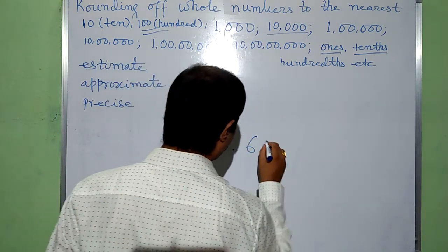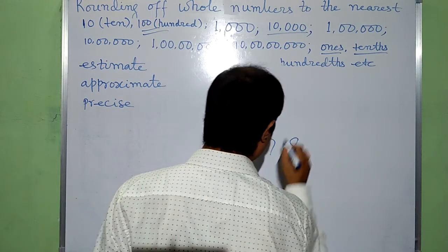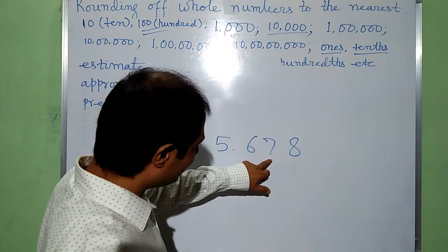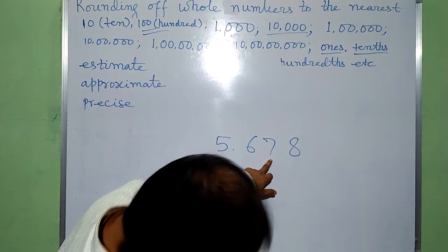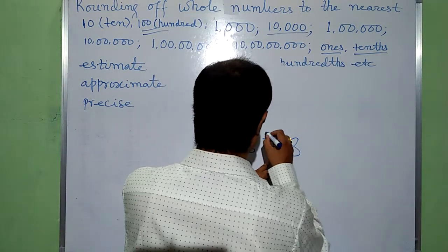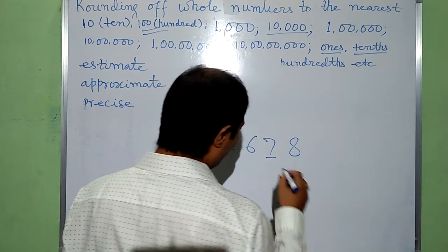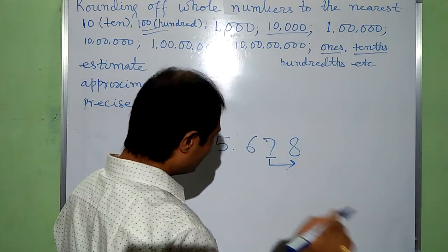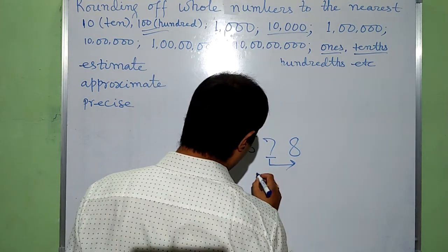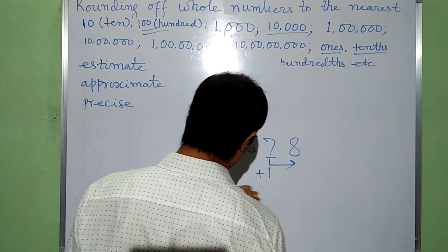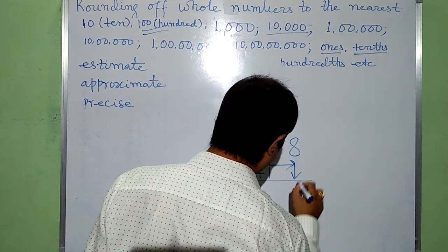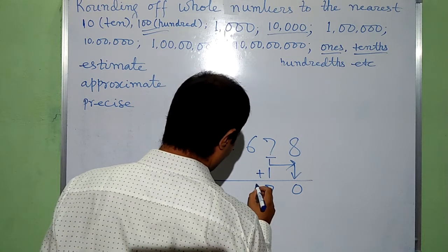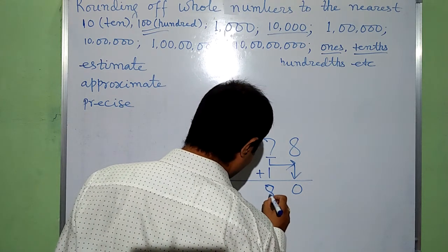Now for rounding decimals to the hundredths place: the target digit is at the hundredths place, here it is 7. We look at the digit just to the right of this 7, that is 8. Since 8 is greater than 5, we need to add 1 here. So 7 plus 1 gives 8. The digit to the right is changed to 0, and the decimal point remains as it is.